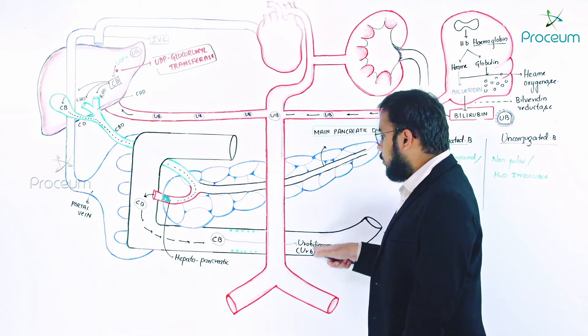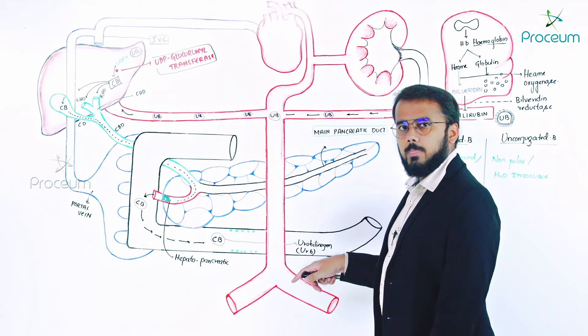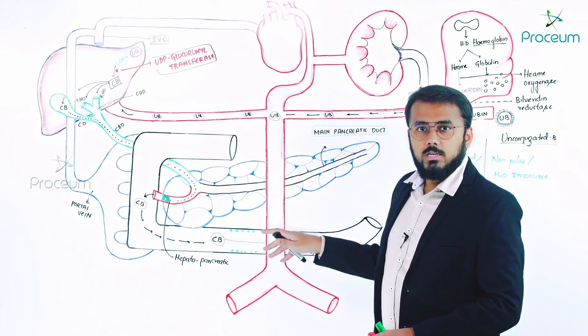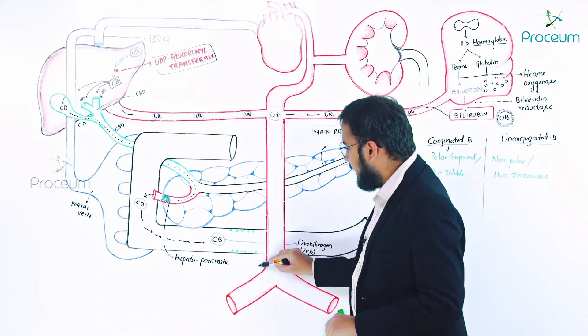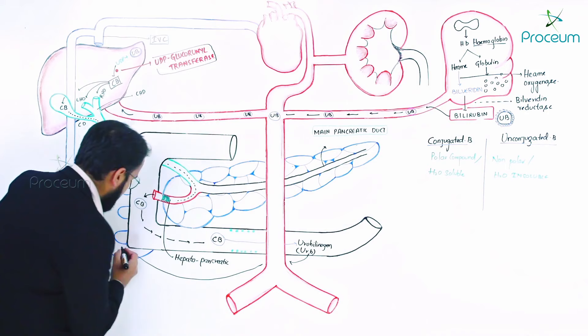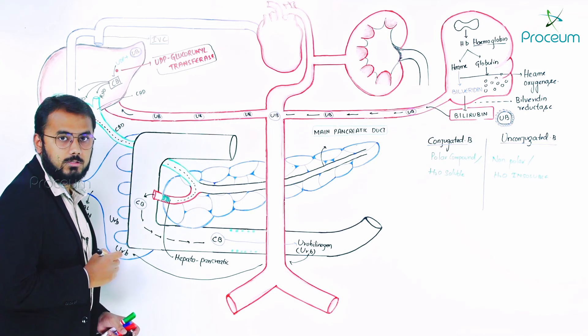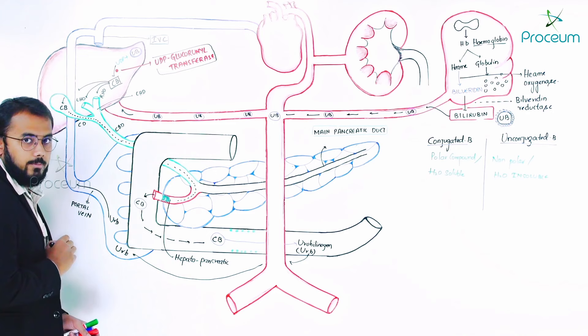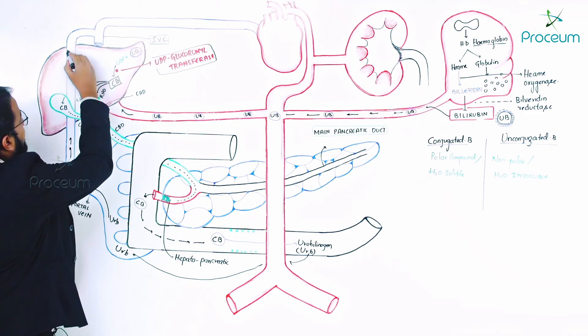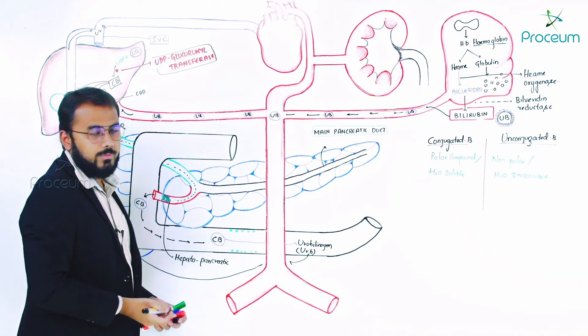Once urobilinogen is formed, 50% of it will travel and enter into the veins. This 50% of urobilinogen then enters the portal vein, travels up, and drains into the inferior vena cava.